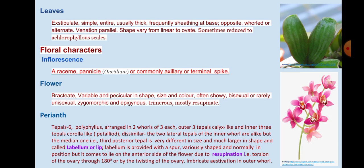Leaves: Exstipulate, simple, entire, usually thick and frequently sheathing at the base. Opposite, whorled, or alternate. Venation parallel. Shape varies from linear to ovate. Sometimes reduced to cataphylls or scales.